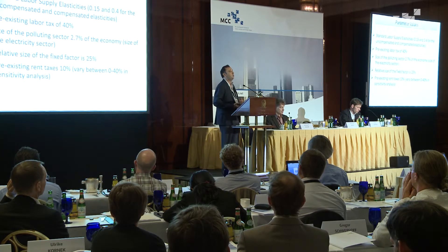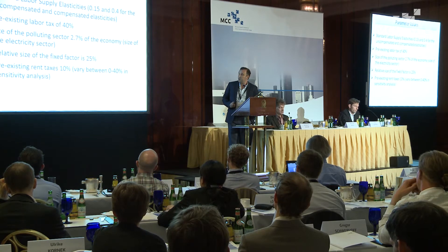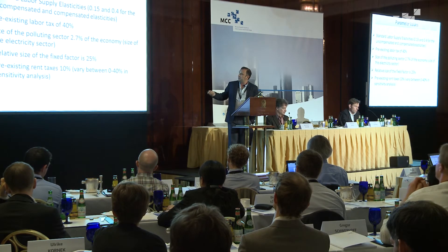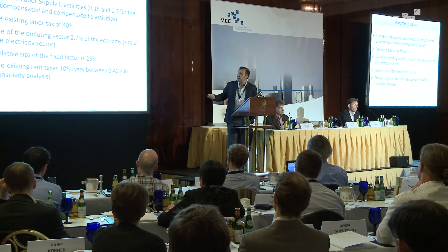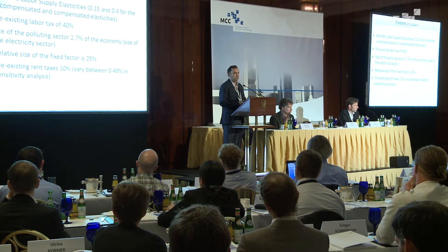I'm now going to put some magnitudes on these effects, in a sterilized sense. We assume standard assumptions related to labor supply elasticities as well as the level of the pre-existing labor tax. The size of the polluting sector is aimed to mimic the size of the electricity sector in the U.S. economy. The relative share of the fixed factor in production of the polluting good is about 25 percent. In the simulation model, I assume a pre-existing rent tax of about 10 percent, and I will do sensitivity analysis on that.